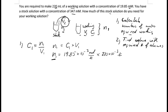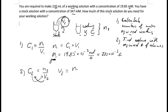Now for step two: we need to find the volume of stock solution that gives us exactly this amount of moles. We know that the concentration of the stock solution equals n2 over v2. The number of moles taken from the stock must equal the moles needed in the working solution, so n2 equals n1. We can rearrange to make v2 the subject: v2 equals n2 over c2.